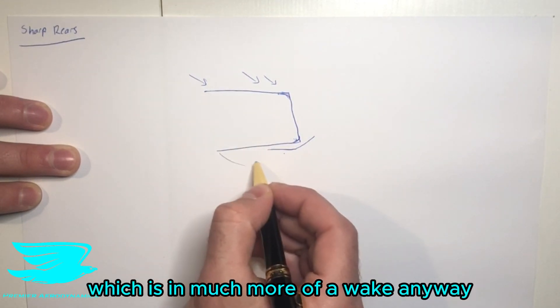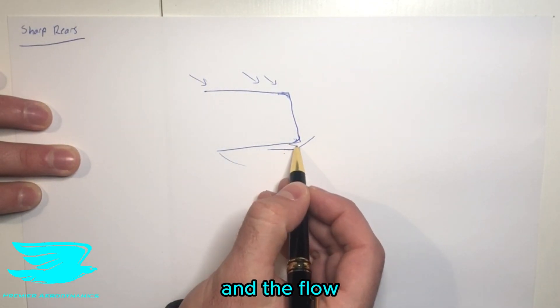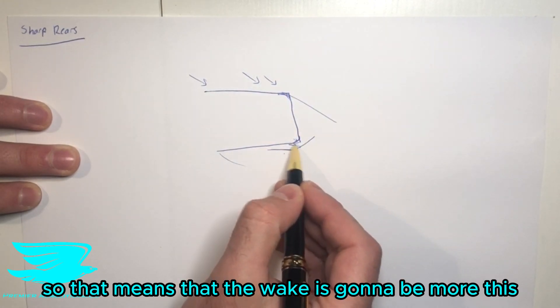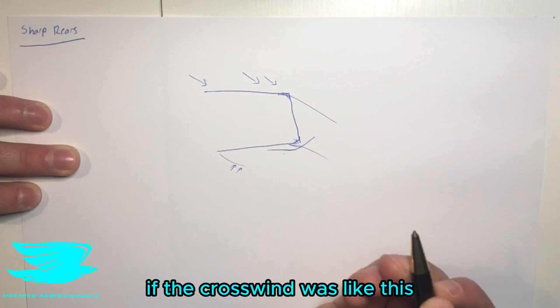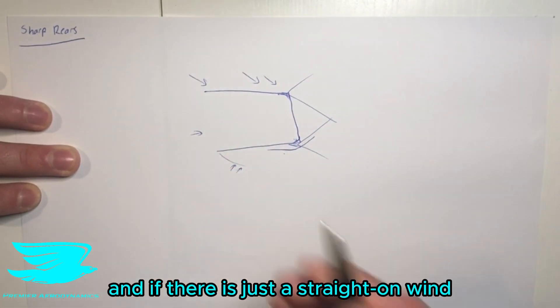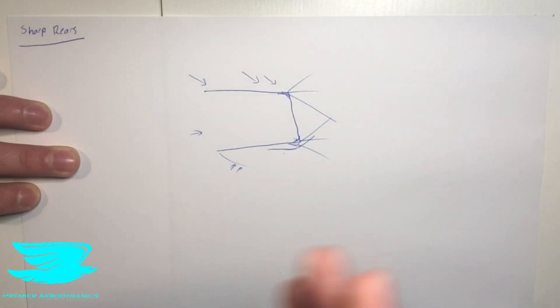So this rear bumper is not going to come into effect and the flow will separate a little bit sooner. That means that the wake is going to be more in this direction here with the crosswind like this. If the crosswind was like this, for example, then the wake will be more like this direction. And if it's just a straight-on wind, then the wake will be a little bit more straight back.